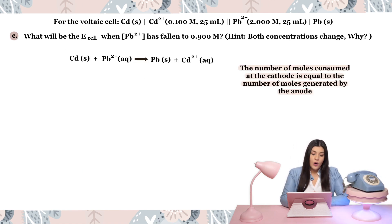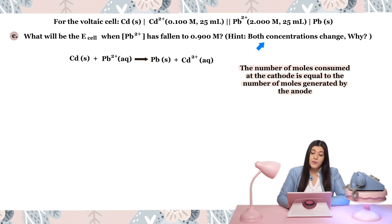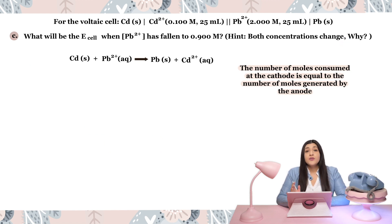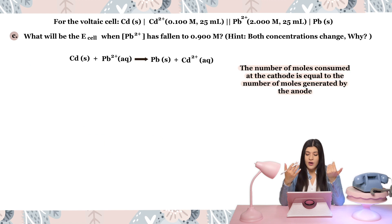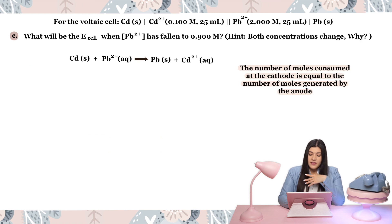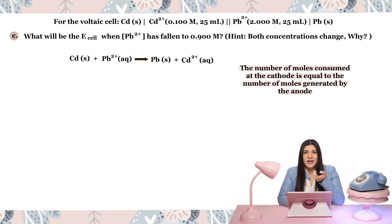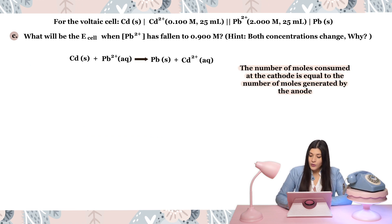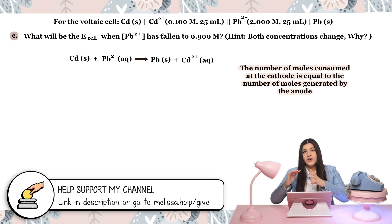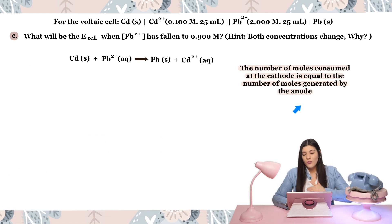For Part C, we need to find E cell when the lead 2-plus concentration has fallen to 0.9 molarity. The hint says both concentrations change — the reason is that as the reaction continues, reactants are consumed and products are produced. If one concentration changes, the other must also change. The key concept is: the number of moles consumed at the cathode equals the number of moles generated at the anode, so both concentrations change together.